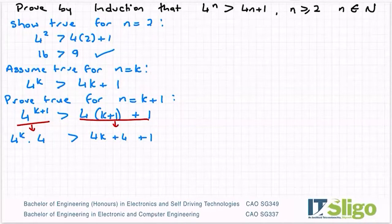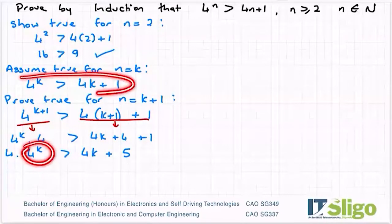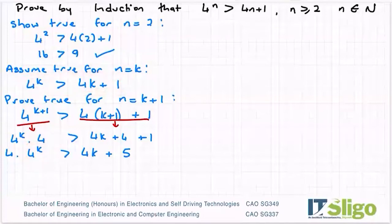So I'll just jiggle this around: 4 by 4k is that greater than 4k plus 5. And I see 4 to the power of k here, so I'm going to use my expression that I developed for when n equals k and sub it in.